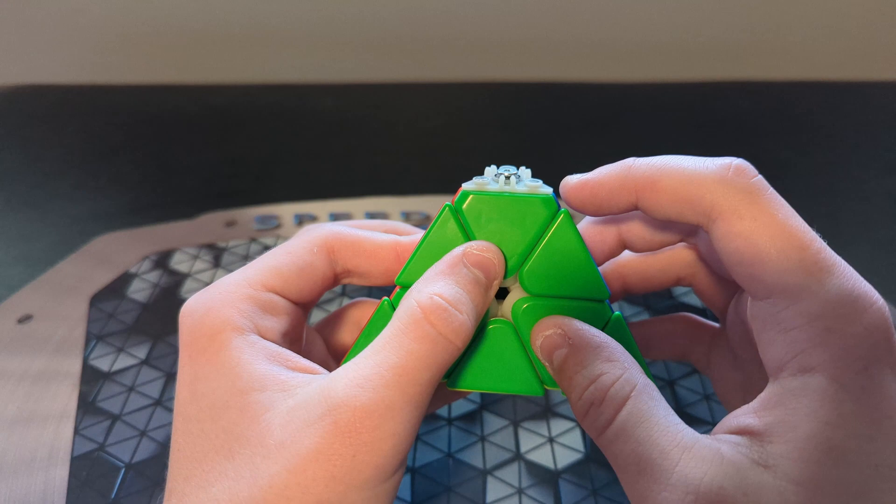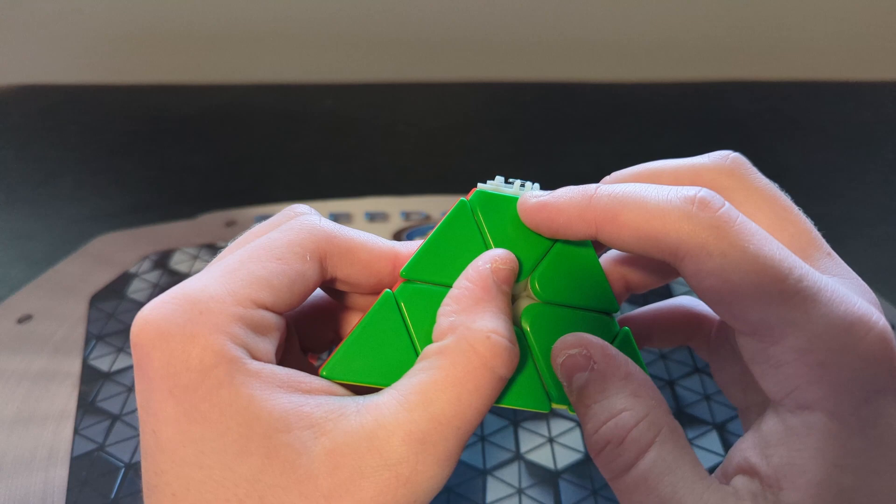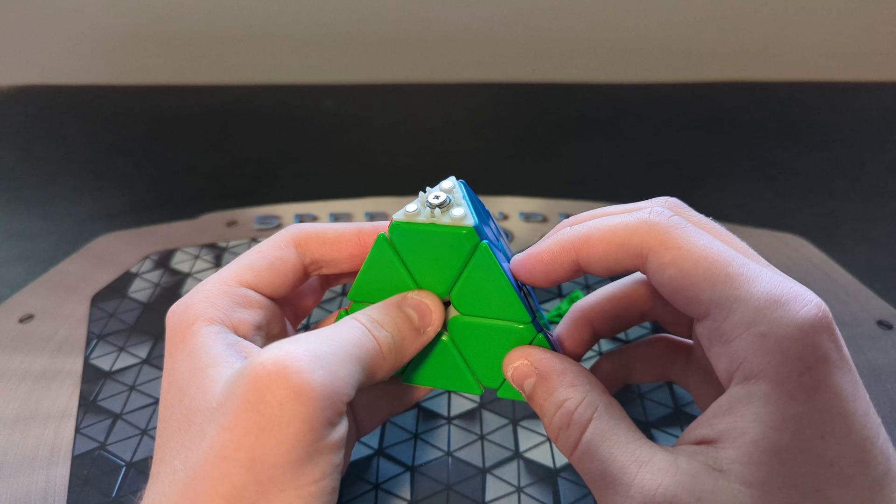A concern I had out of the box is that the tips fell apart pretty easily when it hit the table, and that's because this mechanism to hold them in place isn't very strong. However, this is another thing that YJ said they will be fixing.